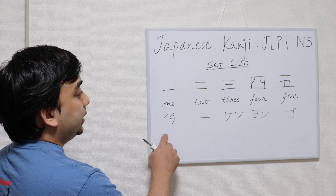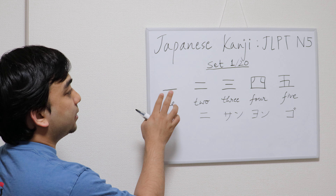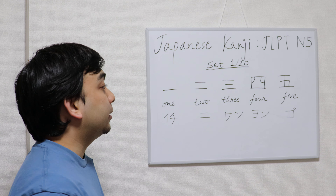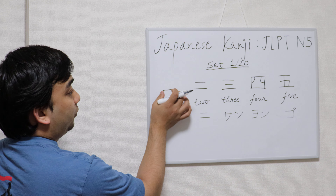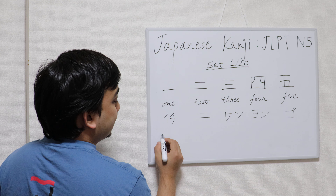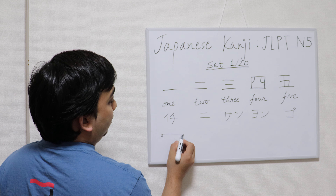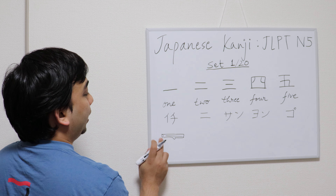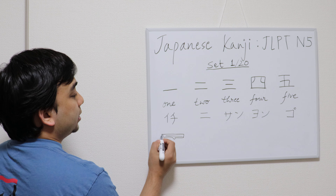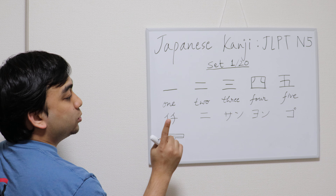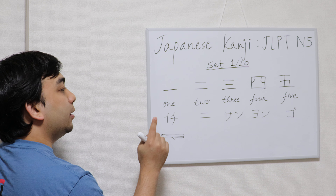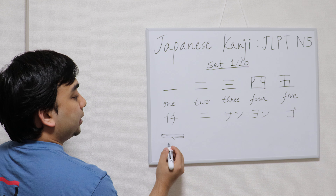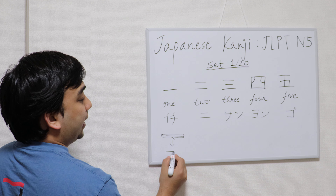Next, what we're going to learn is the way to remember these kanjis by story. For one, you can remember it as a log — you can think of there is one log — and the meaning is one.